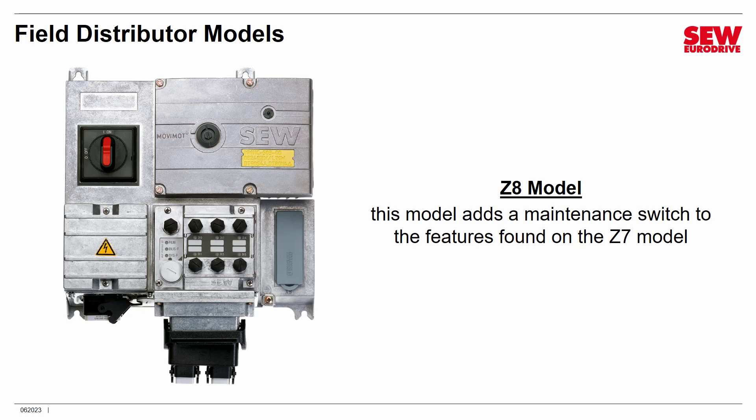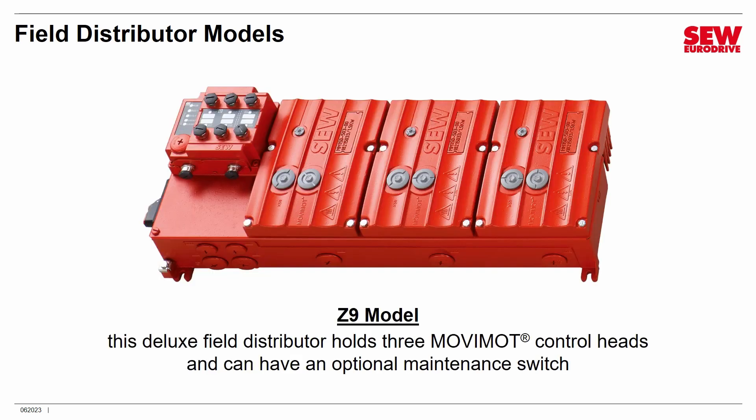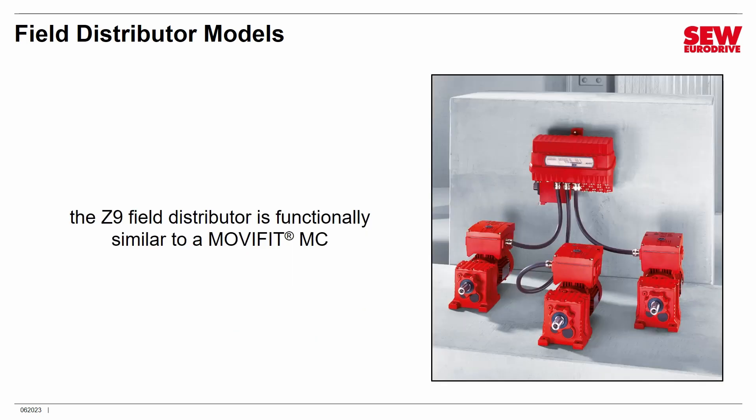The Z8 model adds a maintenance switch to the features found in the Z7 — again, you can see the Movimod control head mounted within it. And then finally, the really deluxe model, the Z9, holds three Movimod control heads and can have an optional maintenance switch. This allows it to control three separate motors. If you're familiar with other SEW EuroDrive products, the Z9 field distributor is functionally similar to a Movifit MC.